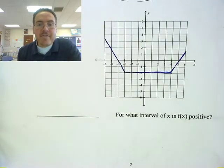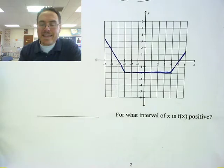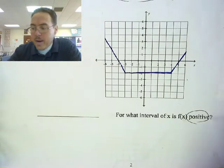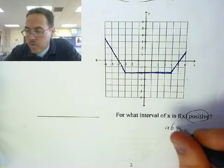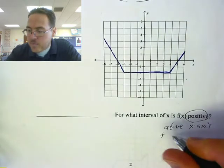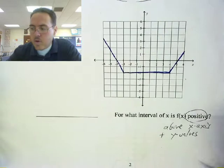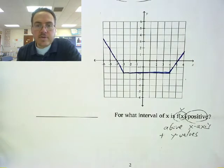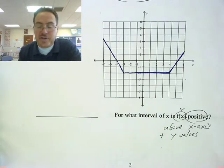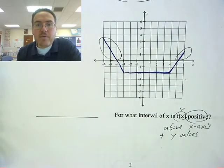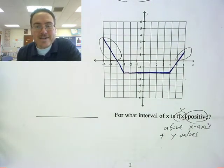For what interval of x is f of x positive? Now this is a key word — positive has nothing to do with slope. Positive just means it's above the x-axis, meaning we have positive y values. Because f of x, you can interpret that as the function — it's your y, it's your outputs. So where are our outputs positive? Where do they have positive values? Well, there are two sections — they're positive here and they're positive over here, above the x-axis. The y values are positive for all of these locations.